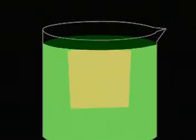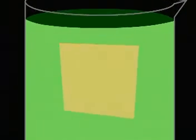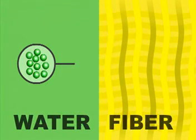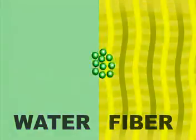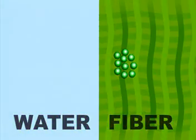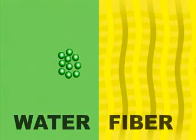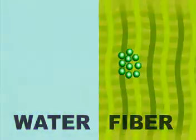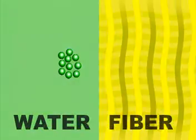Dyeing systems must be set up to minimize what we refer to as hydrolysis, the chemical reaction of the dye with the water. In dyeing, fiber and water are in competition for the dye. This battle between the water and the fiber for dye is resolved by carefully controlling such variables as temperature, pH, and auxiliary chemicals.